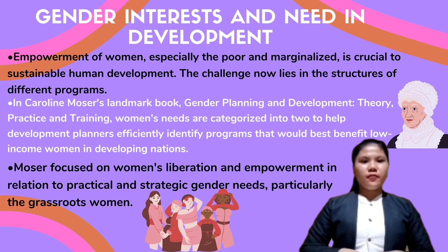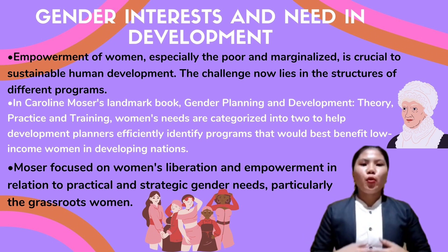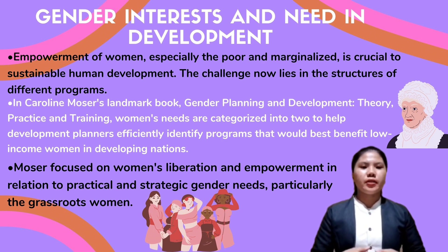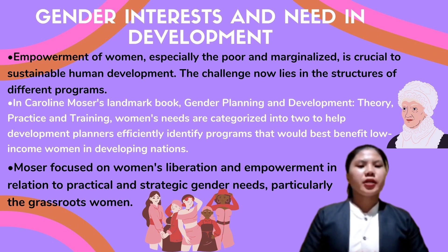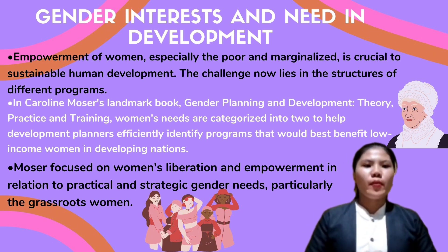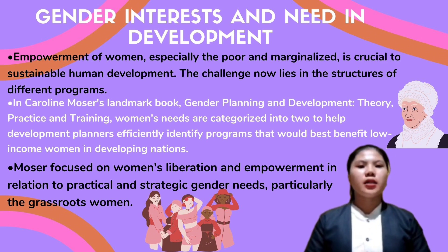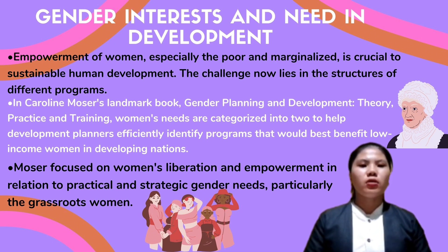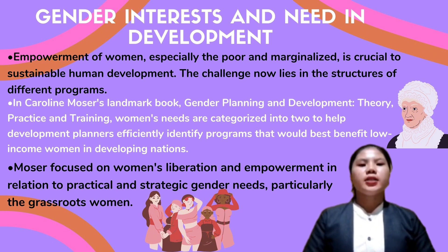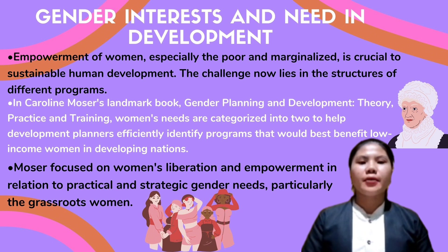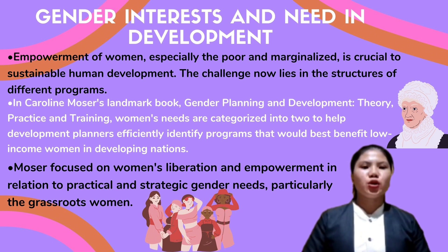We will discuss gender and needs in development. Empowerment of women is needed, especially among the poor. When women are empowered, they contribute more to the community, economic growth, and overall development. In Caroline Moser's framework in gender planning and development, there are two types of women's needs: practical and strategic. Practical needs include, for example, clean water, healthcare, and education — things needed for daily survival. Strategic needs are more long-term and include issues related to power and the status of women in society.